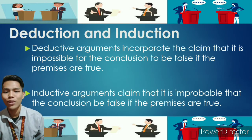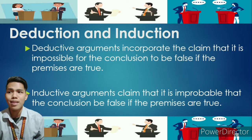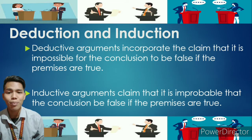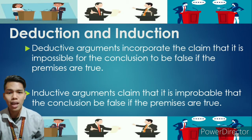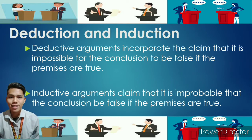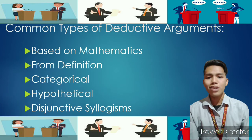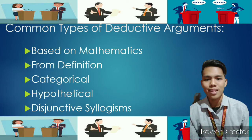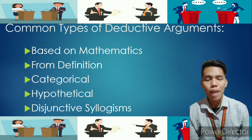Let's proceed to deduction and induction. Deductive arguments claim that it is impossible for the conclusion to be false if the premises are true — that is, if all premises are true, then the conclusion must be true. Inductive arguments, on the other hand, claim that it is improbable that the conclusion be false if the premises are true. The common types of deductive arguments are: based on mathematics, from definition, categorical, hypothetical, and disjunctive syllogisms.